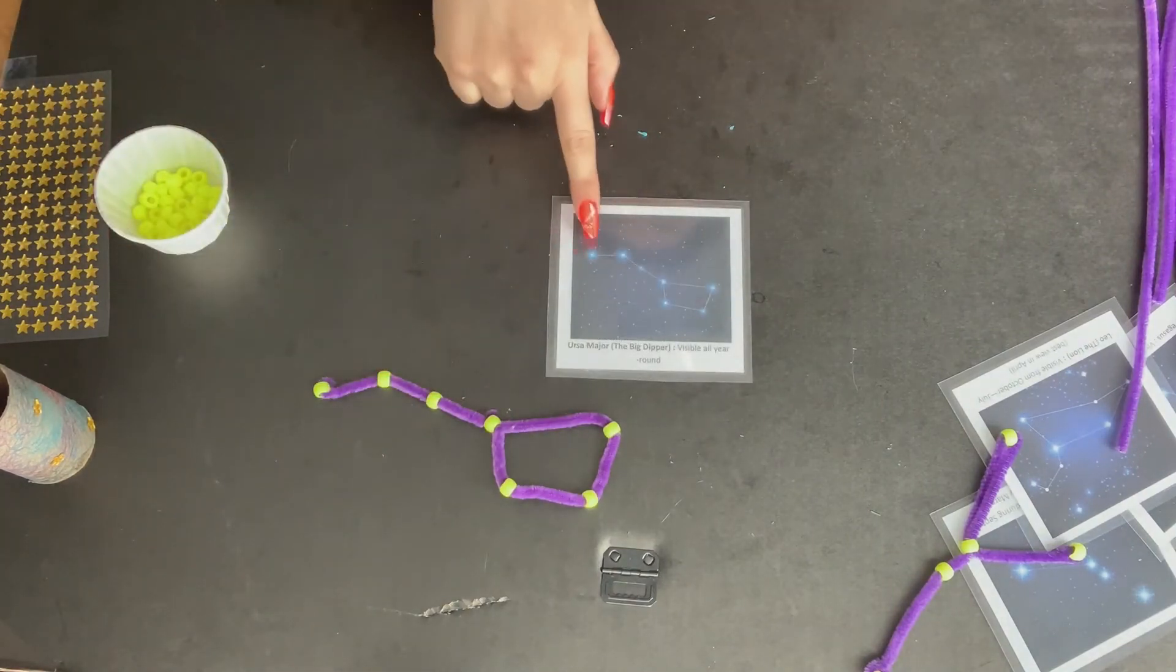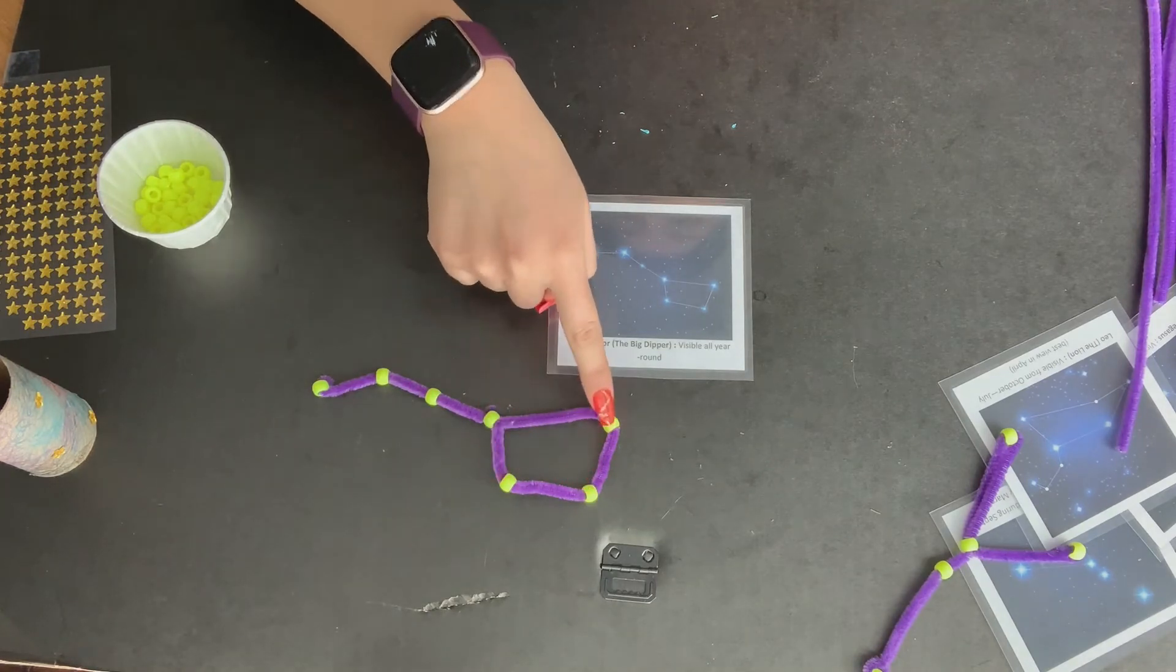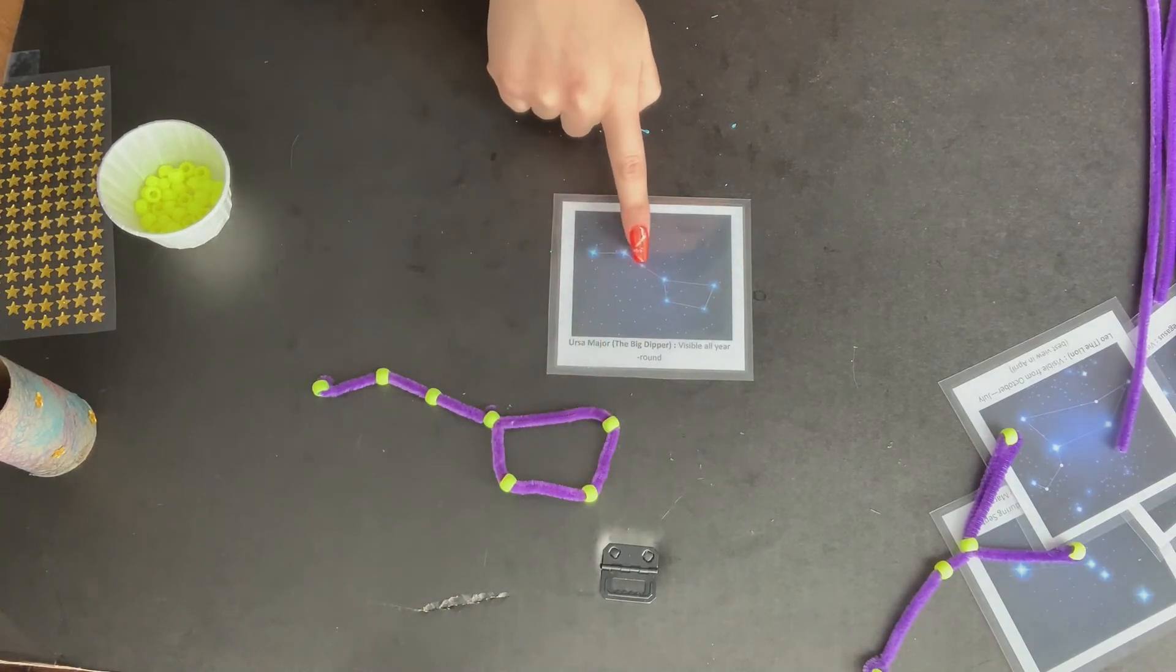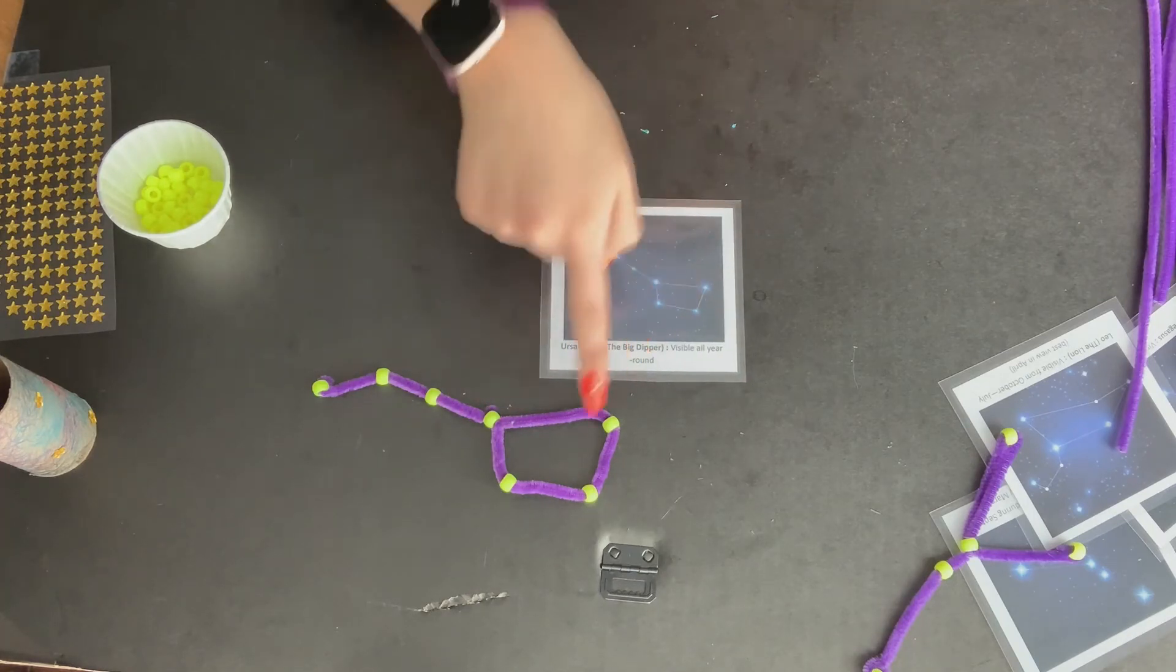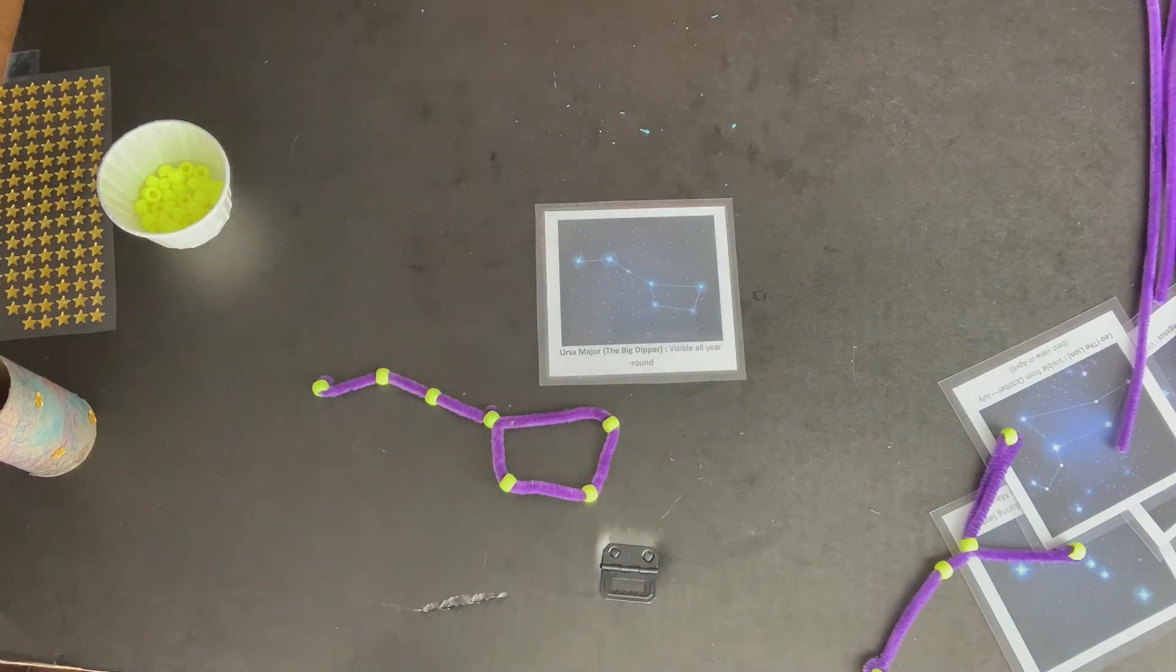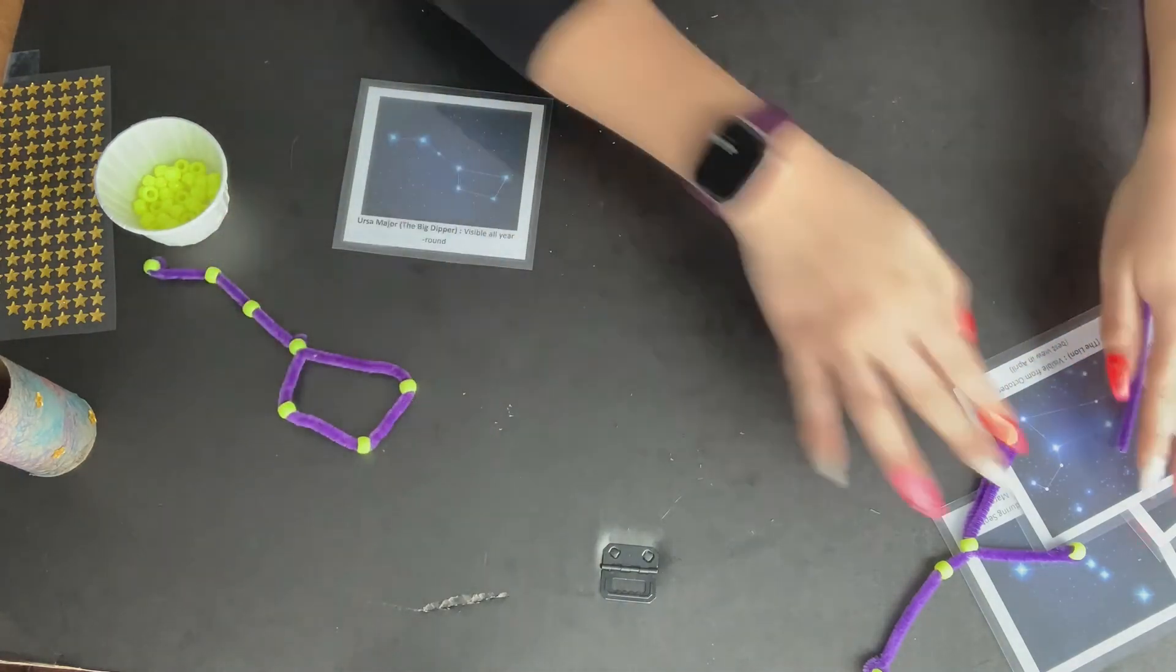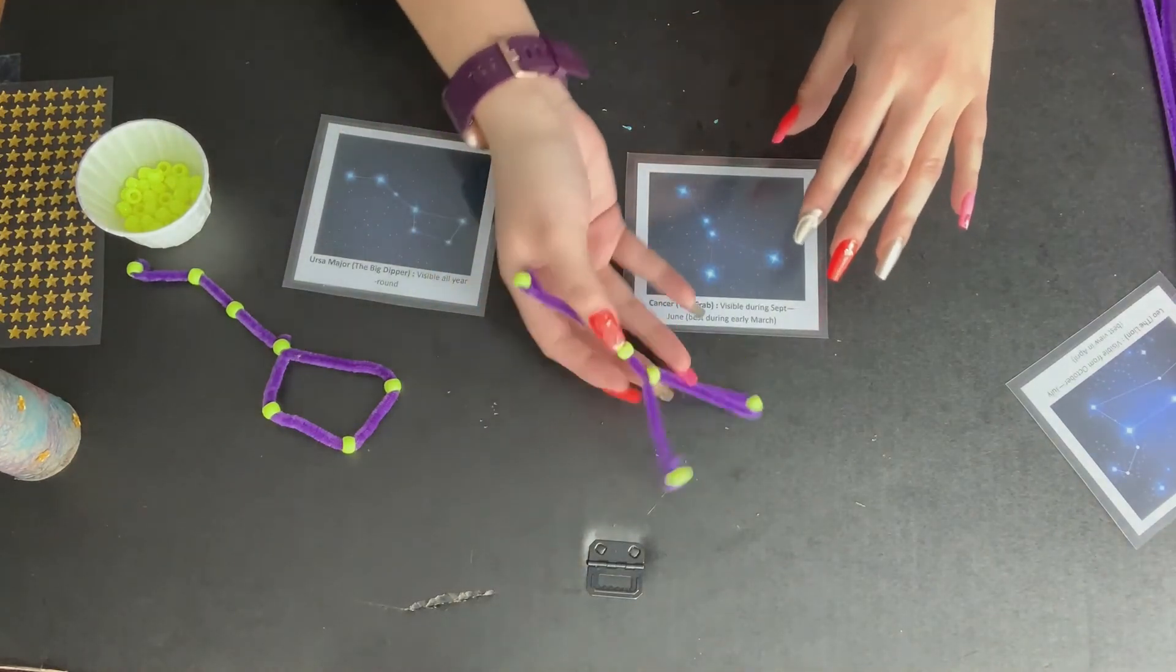So let's count. We have one, two, three, four, five, six, seven beads and one, two, three, four, five, six, seven stars. Both have the bowl and the handle. So I now have that and I have my Cancer constellation, which is the Crab.